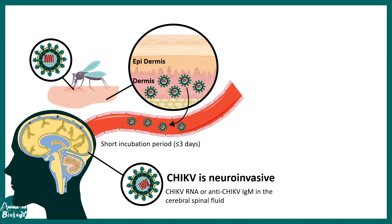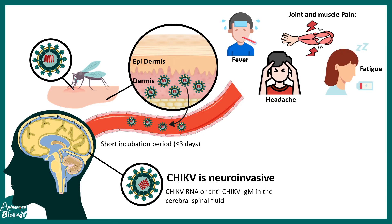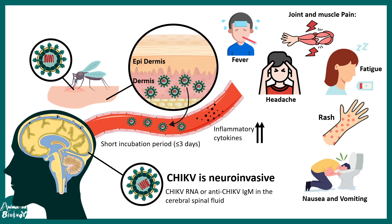However, the consequence of these viral infections on the brain is poorly understood. Symptoms include fever, headache, and joint and muscle pain. The extreme pain in the joints is a very common signature of this disease, unlike its sister virus the dengue virus which causes dengue hemorrhagic fever. There could also be fatigue, rash, and nausea.